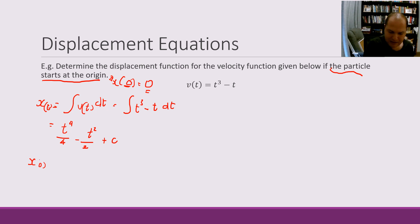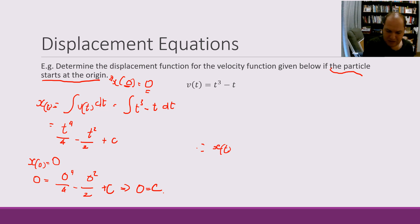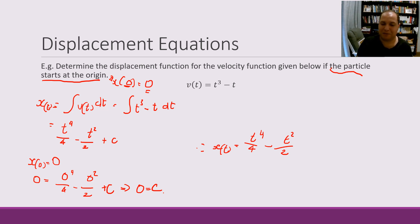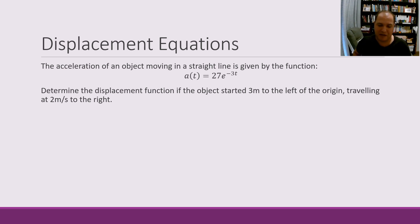Substituting that in: 0 = 0⁴/4 minus 0²/2 plus c, which means 0 = c. So therefore my displacement equation is x(t) = t⁴/4 minus t²/2, and there's no plus c because we just worked out the c value is zero. In some ways we're just finding a specific anti-derivative but we're doing it in the context of a displacement-velocity set of equations.